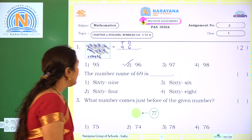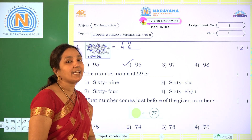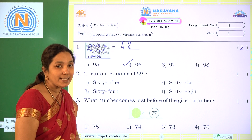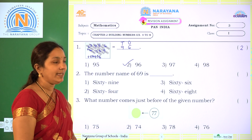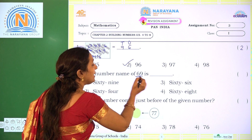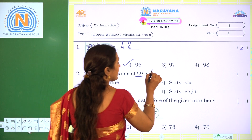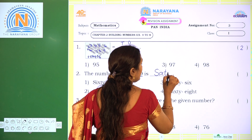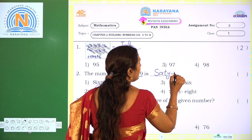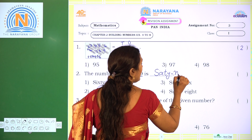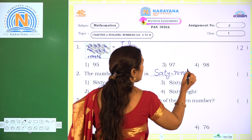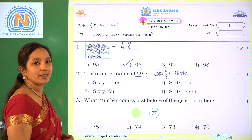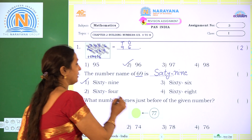Next one. The number name of 69 is — what is the spelling of 60? S-I-X-T-Y. And 9 is N-I-N-E. So the correct option for 69 is option 1.